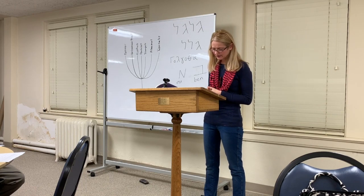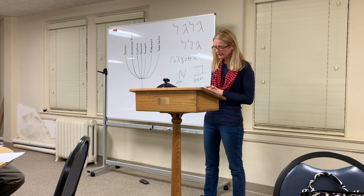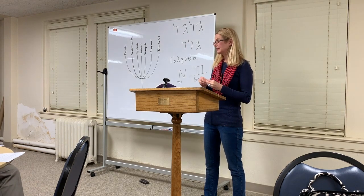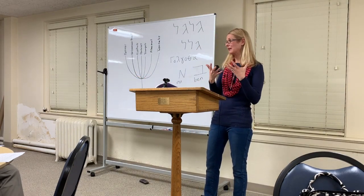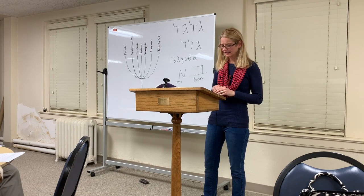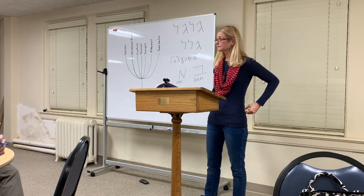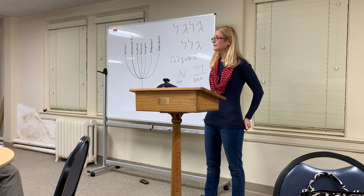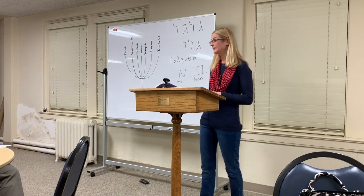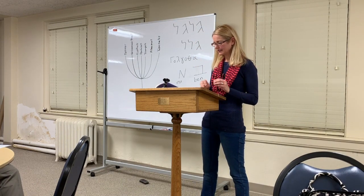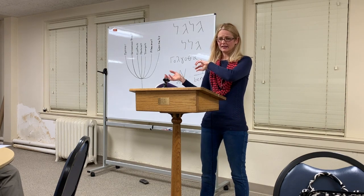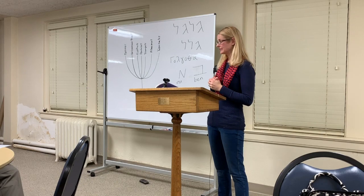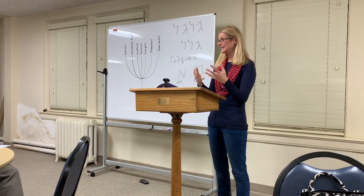Jesus refers to this in Matthew 12: 'An evil and adulterous generation seeks after a sign, and there shall no sign be given it but the sign of the prophet Jonah.' Jonah was spat out on the third day; Jesus came out of the tomb on the third day; the first fruits first appeared on day three of creation. God had it planned from the beginning. The sign of Jonah specifically represents being delivered on the third day — Jesus will be in the belly of the earth three days and three nights and resurrect on the third day.